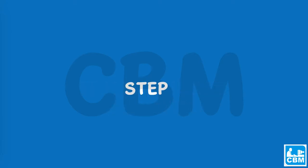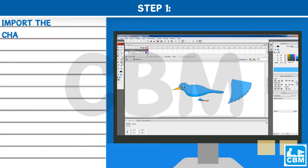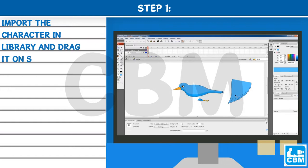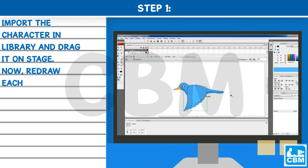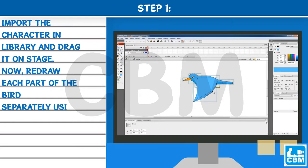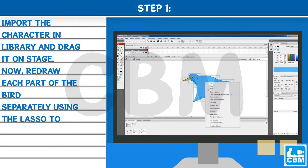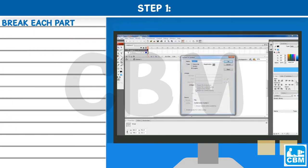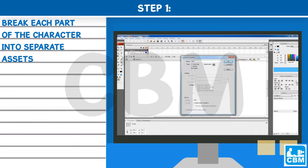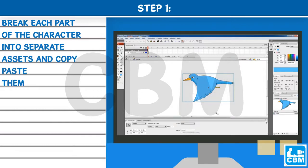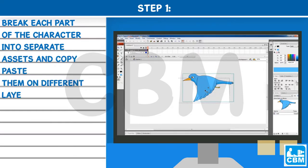Step 1: Import the character in the library and drag it onto the stage. Now, redraw each part of the bird separately using the lasso tool — face, wing, and body. Break each part of the character into separate assets and copy-paste them onto different layers as shown.